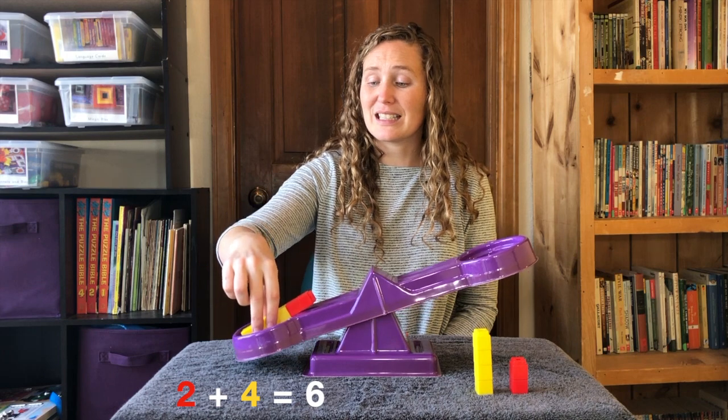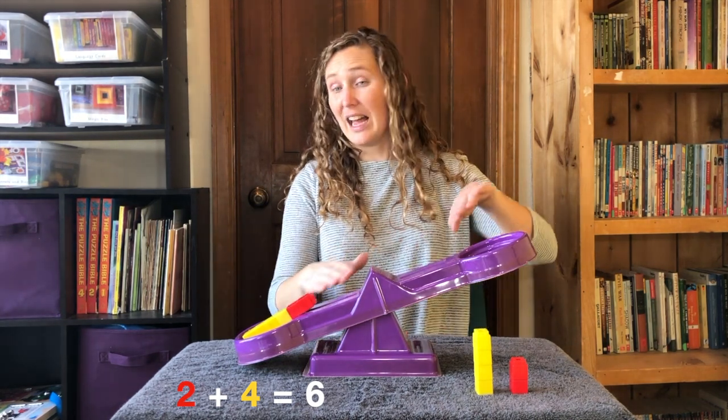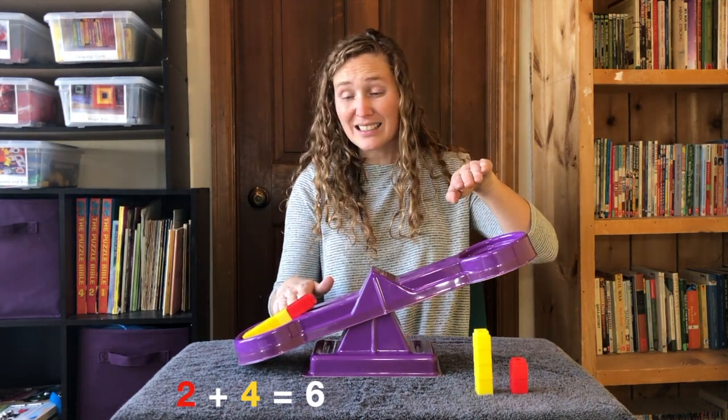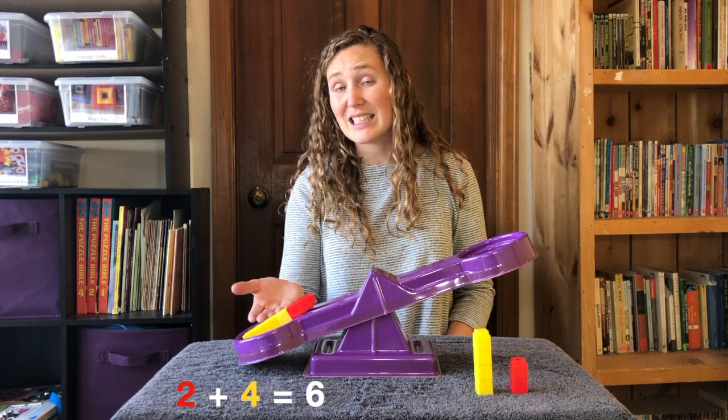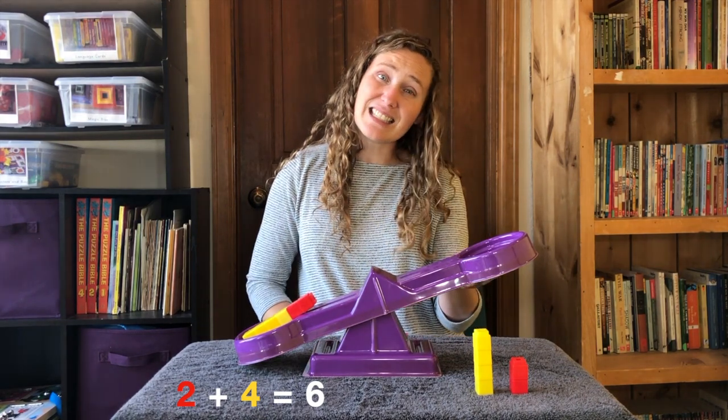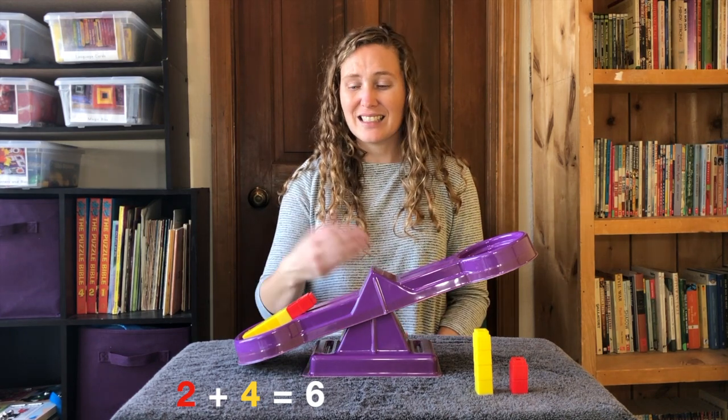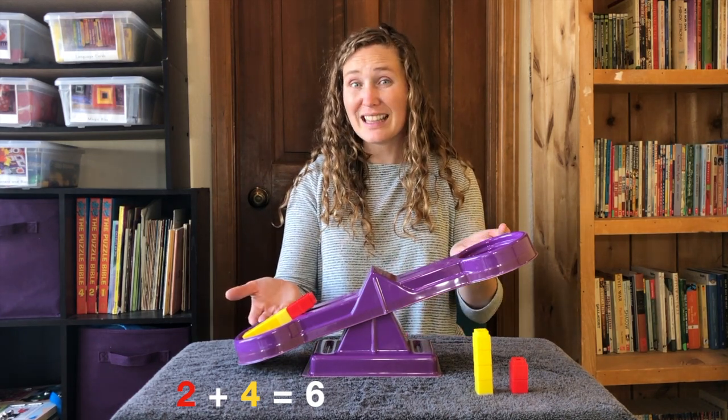Let's put six in this side. Now it's not equal, is it? There's more weight on this side. Six on this side, and zero on this side. This weighs more than this side.